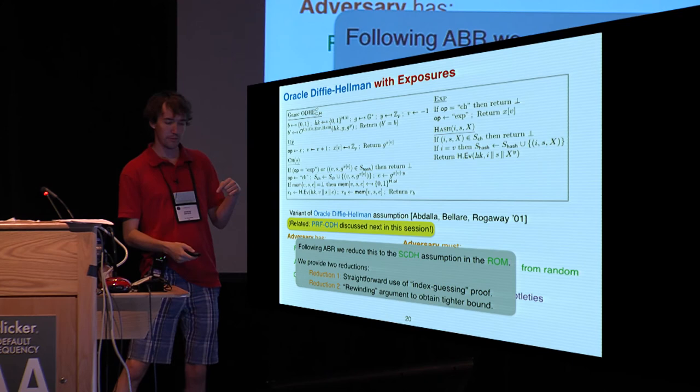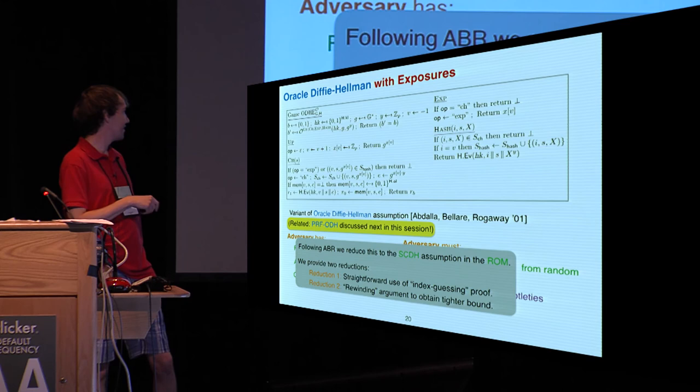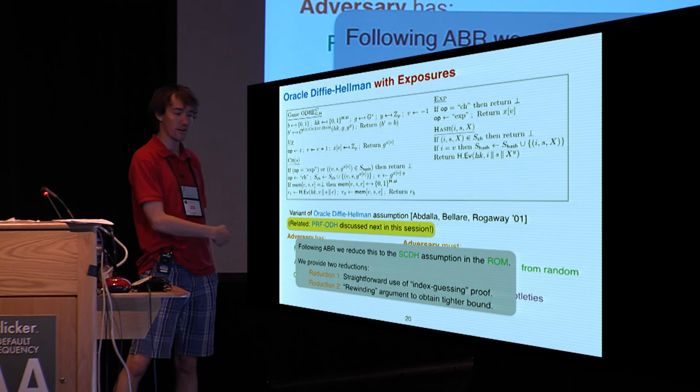We, in fact, do this twice in our paper. First, we do it with the first proof one would think of doing, a straightforward index guessing sort of proof. But then, because there's some inherent non-tightness in that proof technique, we redo the reduction using a more clever rewinding argument so that we can obtain a tighter bound on the security. Thanks for listening.